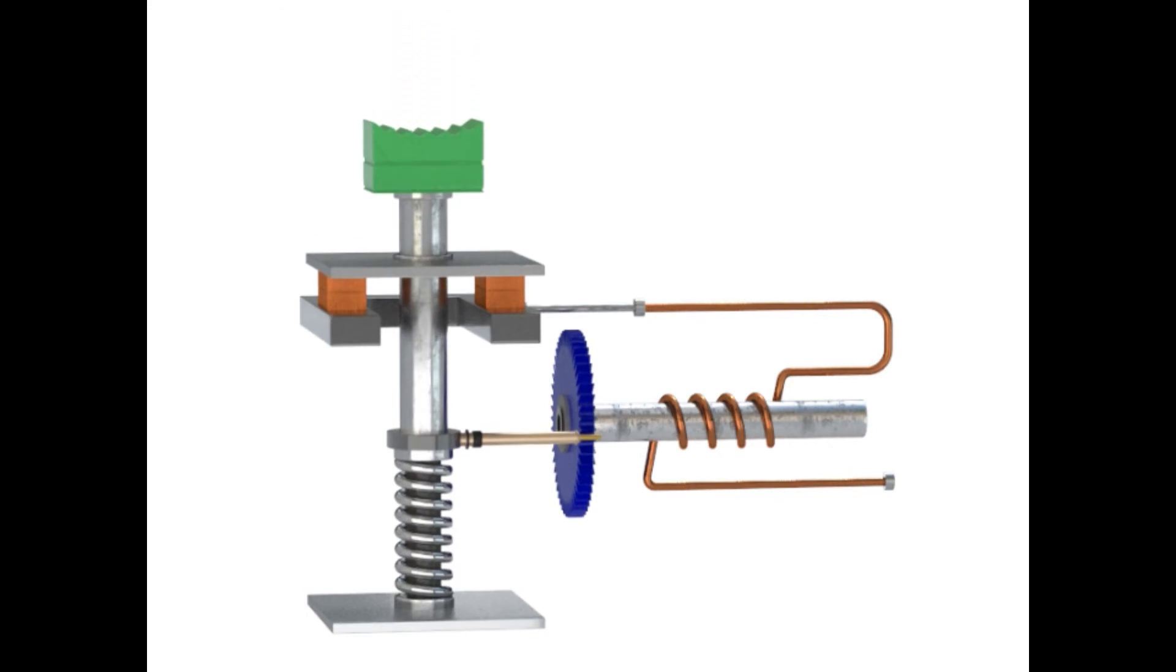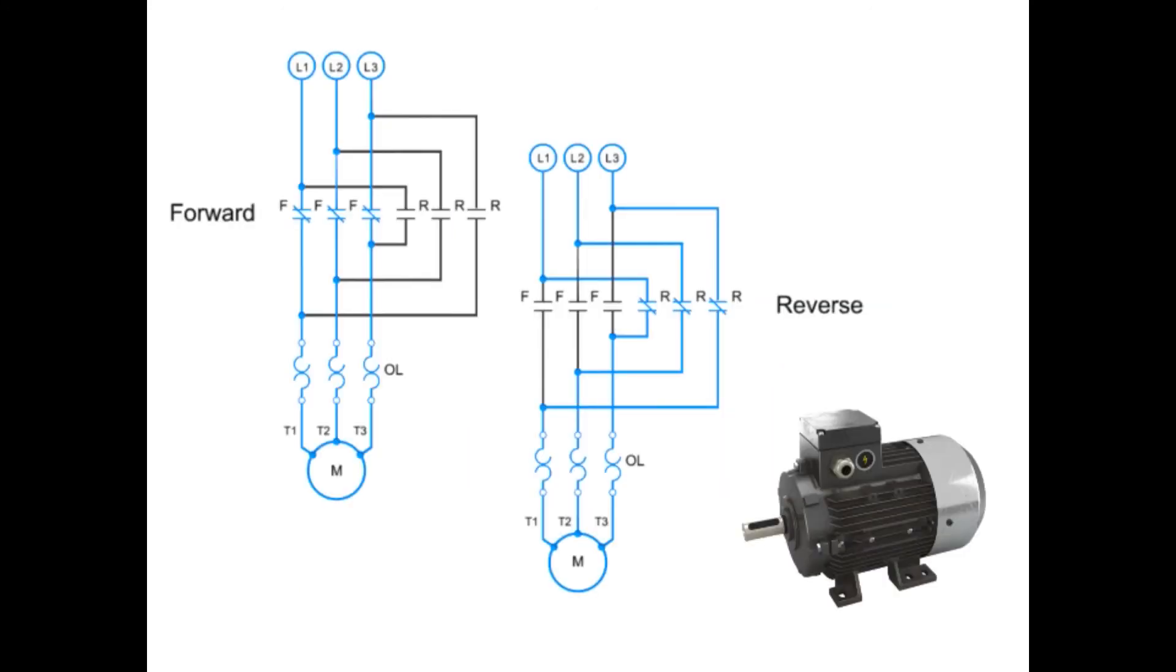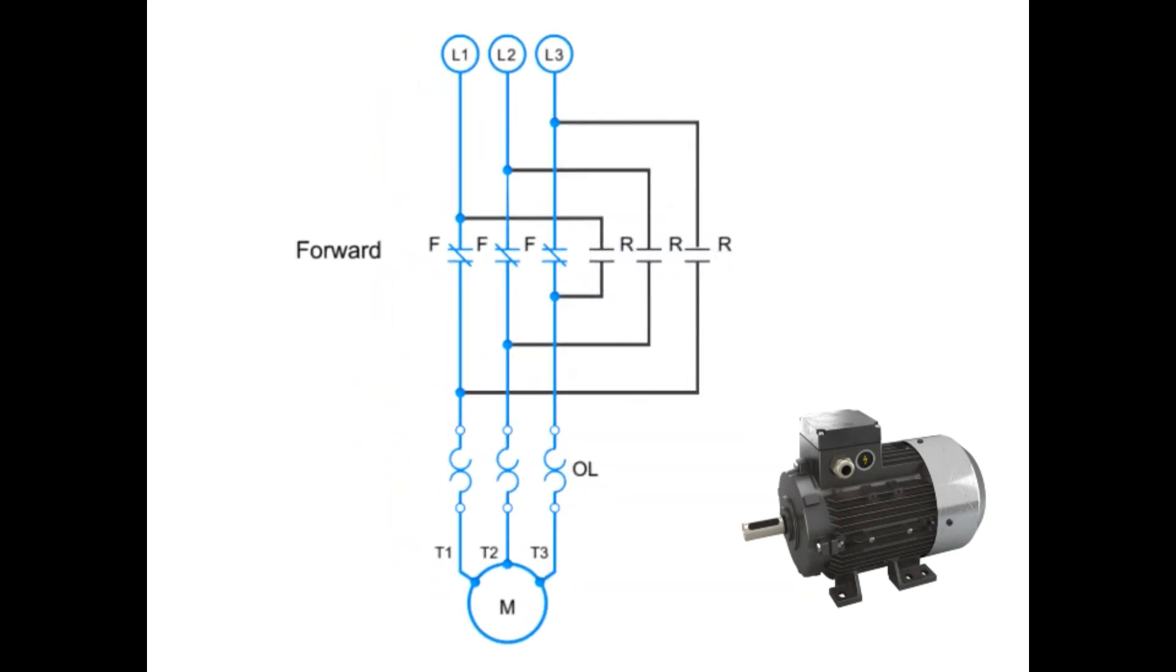Another important part of motor electronics is forward and reverse circuitry. Here is an example of the circuitry for a forward and reverse three-phase motor. When the motor is running in forward, the circuitry contacts are connected in numerical sequence: L1 to T1, L2 to T2, and L3 to T3.